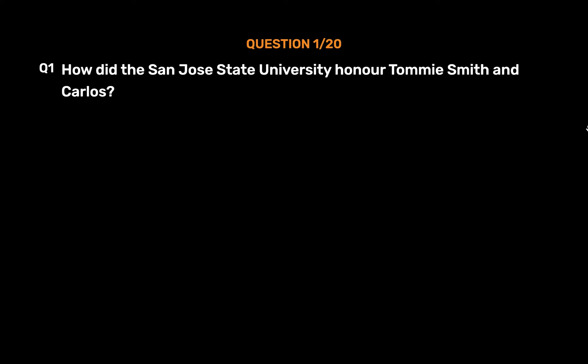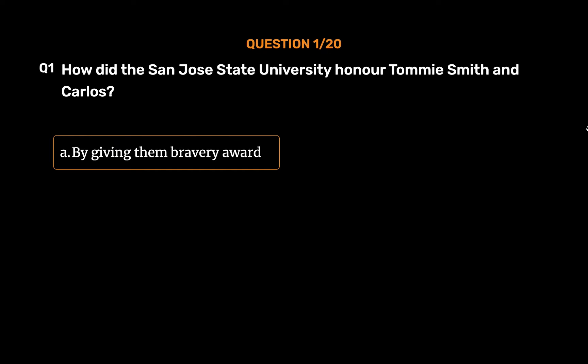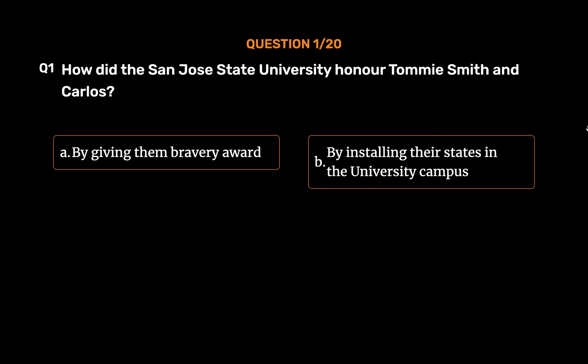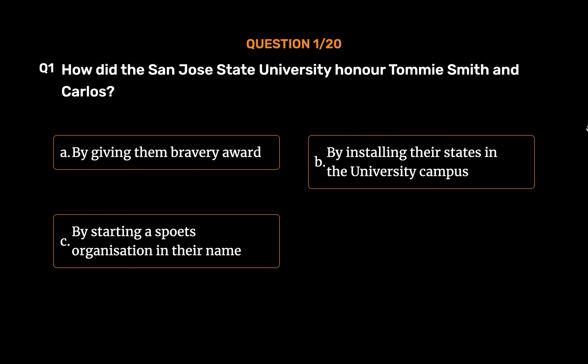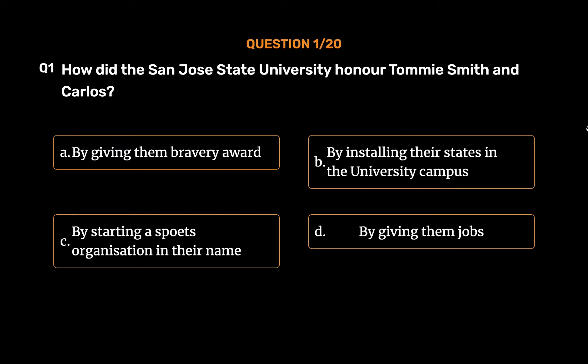Question number 1. How did San Jose State University honor Tommy Smith and Carlos? Option A: By giving them a bravery award. Option B: By installing their statues in the university campus. Option C: By starting a sports organization in their name. Option D: By giving them jobs.